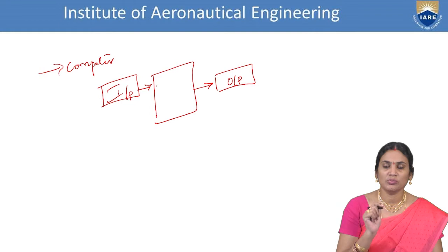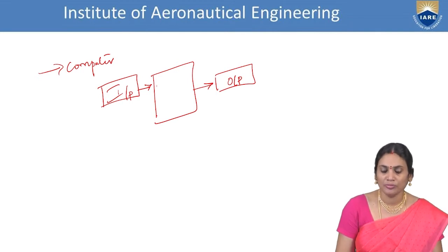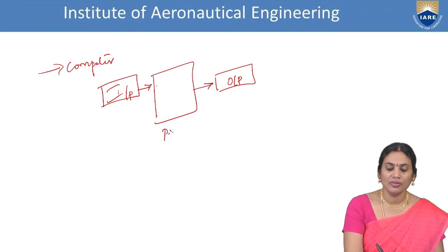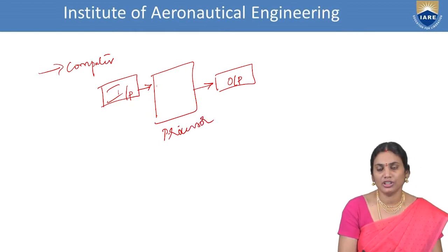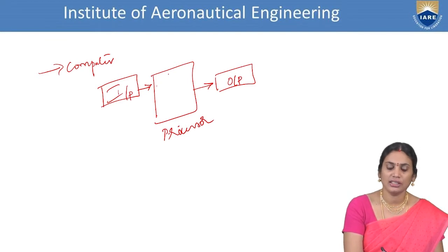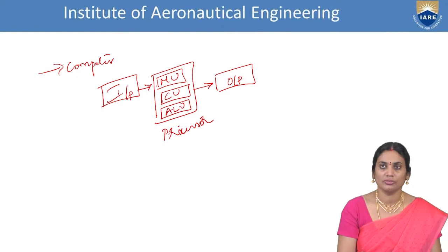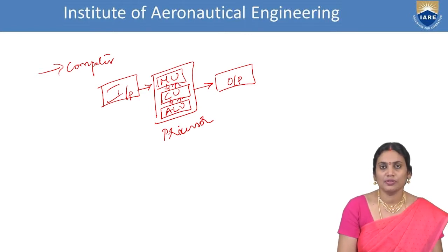For example, I am writing something on the slide with this pen and presenting it on the monitor — that is the output device. Even scrolling the slides is an operation accepted as input. Inside the processor we have basic functional units intended to operate the computer perfectly: the memory unit, control unit, and arithmetic logic unit. These three are connected bi-directionally so they can interact with each other — this is the organization of a simple computer design.